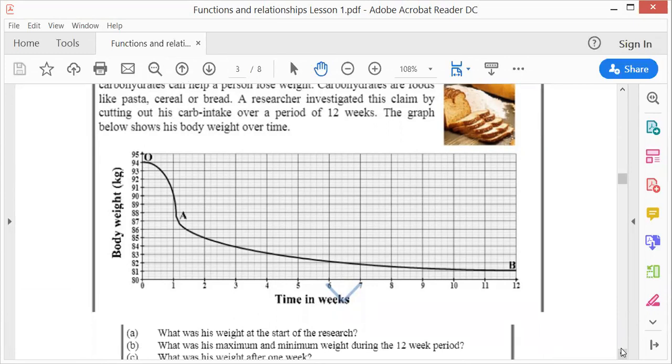First question. What was the weight at the start of the research? At the start, there you are, 94 kilograms. What was his maximum and minimum weight during the 12-week period? So maximum was 94 and minimum was 81. Can you see, guys? 81 kilograms.